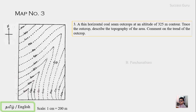This is map number three. As you can see, there is a north arrow on the left-hand side, a scale at the bottom, and a contour pattern on this map. The question is: a thin horizontal coal seam outcrops at an altitude of 325 meters. Trace the outcrop, describe the topography of the area, and comment on the trend of the outcrop.